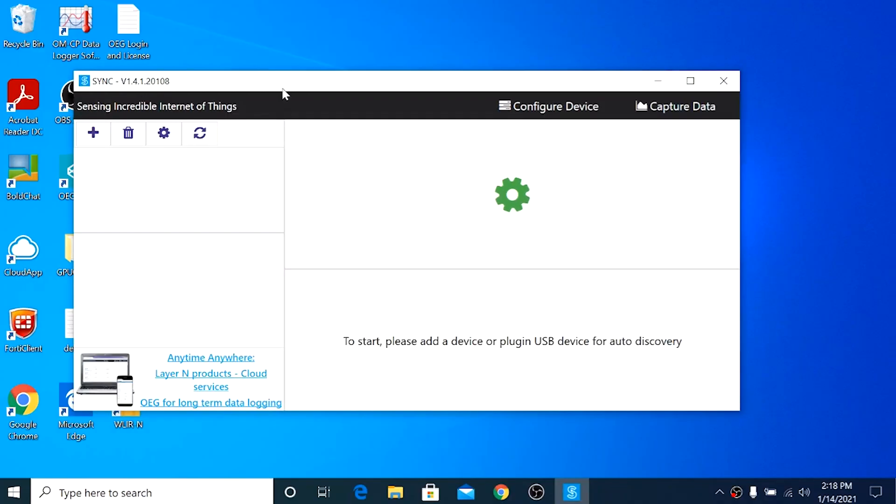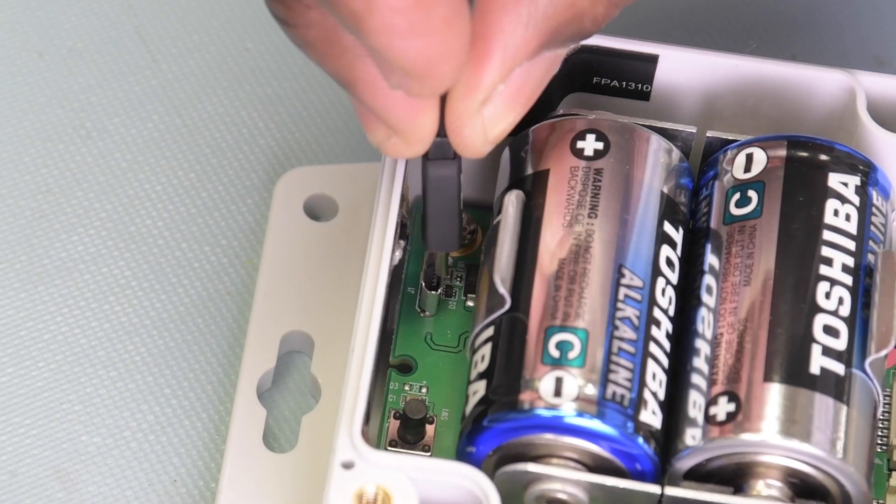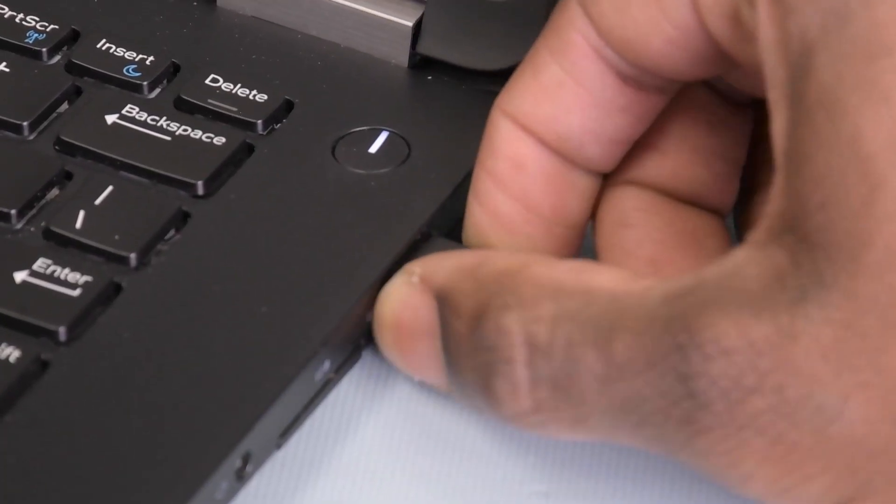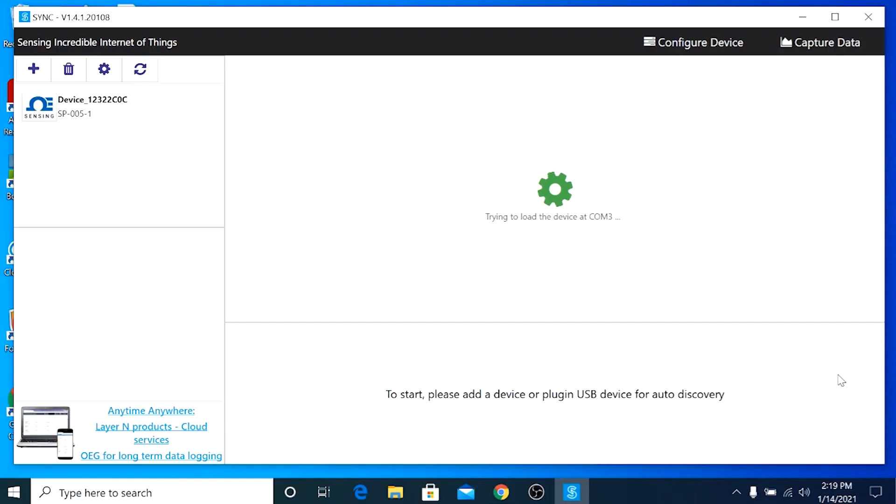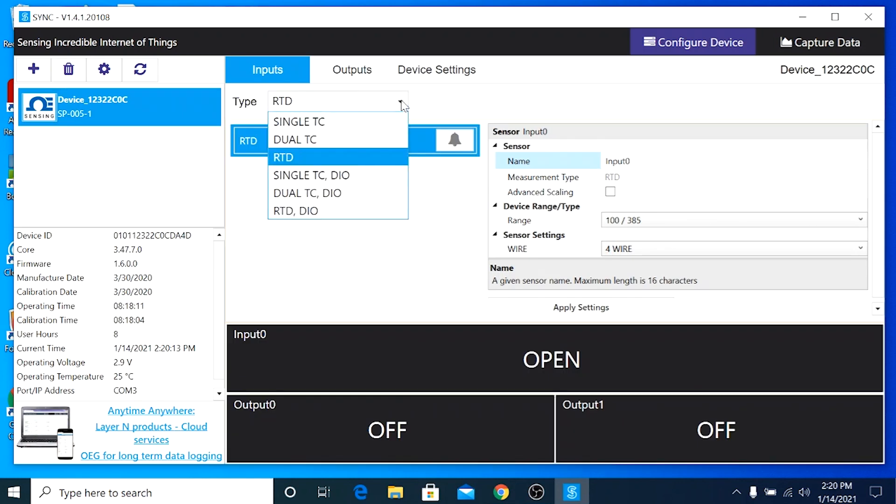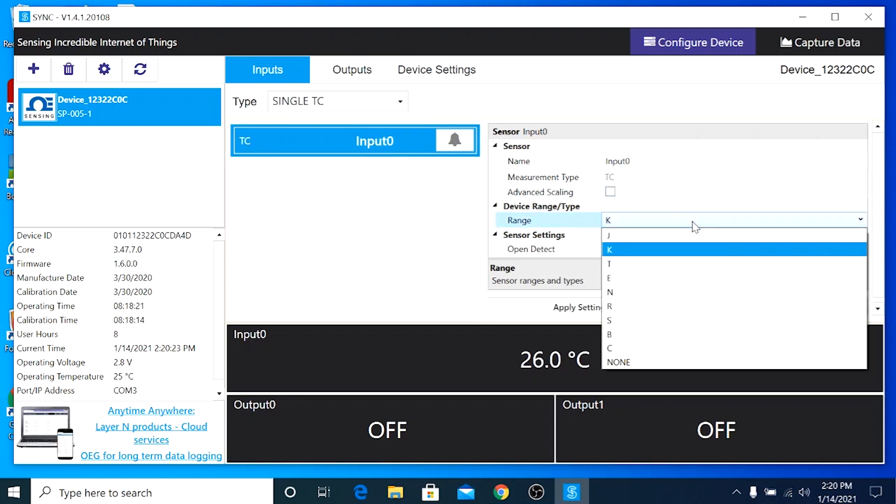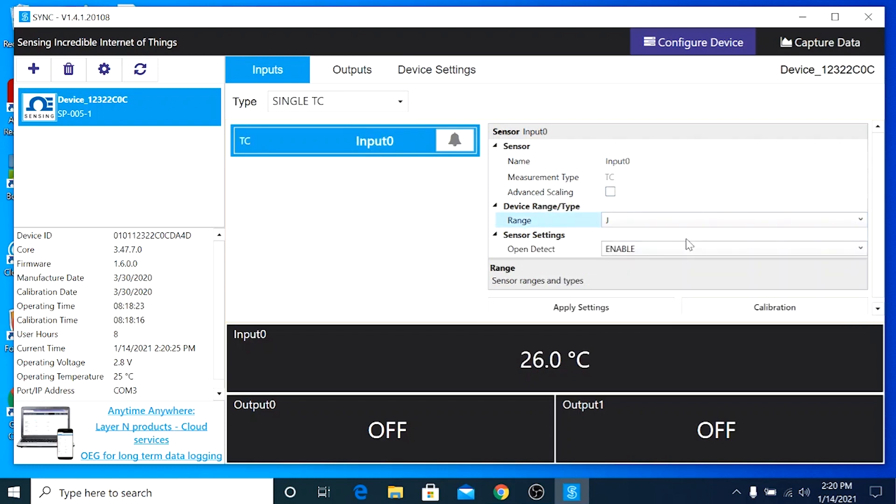Now let's go to the PC and launch the Omega Sync configuration software and connect the micro USB cable to the USB port inside the IF-006 and plug the other end into the PC. Sync will auto detect the smart probe. In the inputs tab, I'll select the type dropdown and choose single thermocouple. And under device range, choose type J since this is a type J thermocouple, then click apply settings. And our smart probe has been configured.